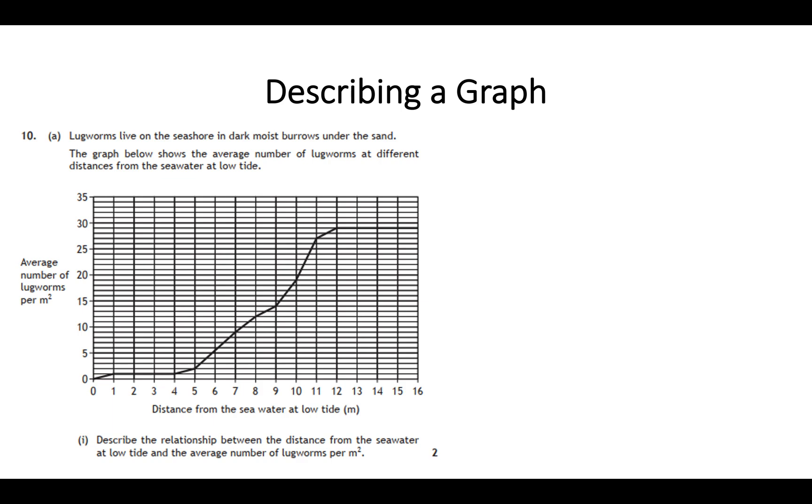The question asks you to describe the relationship between the distance from the seawater at low tide and the average number of lugworms per meter squared. First of all, this is quite a common sort of question asking for the relationship between the two sets of numbers—effectively, what happens to the average number of lugworms as the distance increases. The second thing to be careful of is that this is a two-mark question. If it's a two-mark problem-solving question, it's not going to be enough to say something like 'it increases.' There must be something else that is going on.